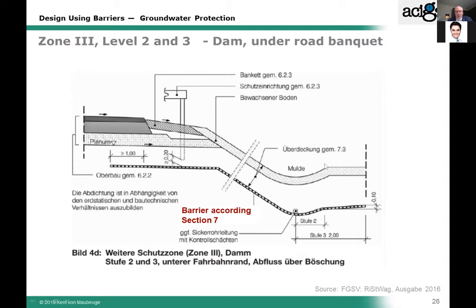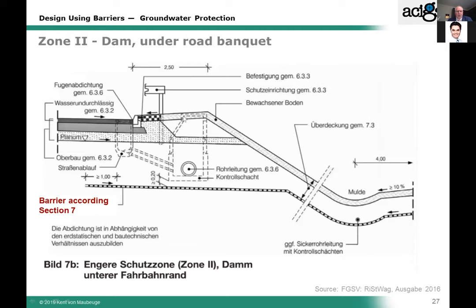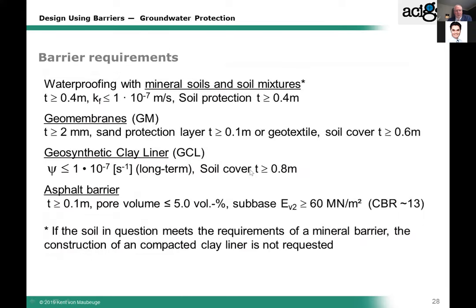The barrier system then has to be designed according to section 7. You can collect rainwater from the top of the road on top of your lining system, or collect it under the barrier system — in which case the manhole must be waterproof. Section 7 is actually the weak part of this design guideline, where the ISO design guide would help the designer. For a geomembrane, it only says: 2 mm thickness, a sand or geotextile protection on top, and 60 cm cover soil.